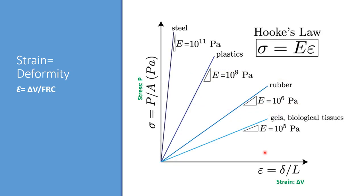Different elasticity will result in different strain — the higher the elasticity, the less strain on the material. If you apply a force on a biological tissue, you end up with much more displacement or strain compared to applying the same force on plastic or rubber, where the strain or displacement will be much lower.